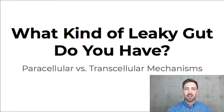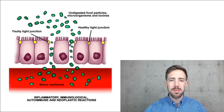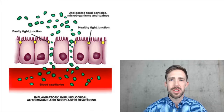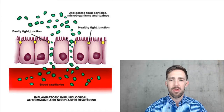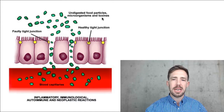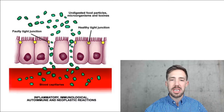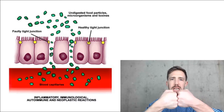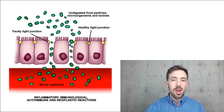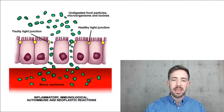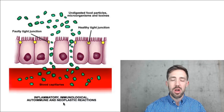With leaky gut, let's start with a little brief background. Many people have seen an image like this — the gut lining, the gut cells, and what's called the microvilli of the gut. You can see undigested food particles, maybe microorganisms, maybe toxins. Here's a faulty tight junction. We often see this picture of tight junctions that have broken apart and now the gut is leaky. That's explained in an elementary sense, but it's true — and there's more to it. Things get into the blood and lead to inflammatory, immunological, autoimmune, or neoplastic reactions. So that's your traditional leaky gut.